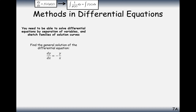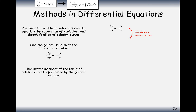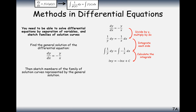Let's move on to the next one, which is very similar but now dy/dx equals minus y over x. We multiply the dx onto the other side and divide y onto the left-hand side, giving 1 over y on the left and minus 1 over x on the right. The integrals of these are going to be natural logs, so it's ln|y| equals minus ln|x| plus c.